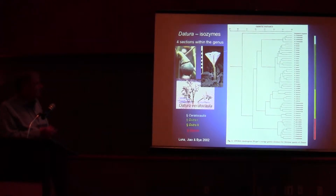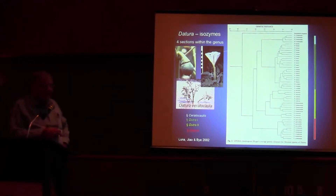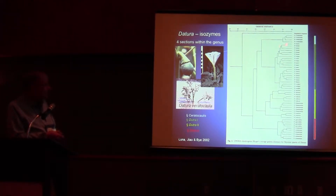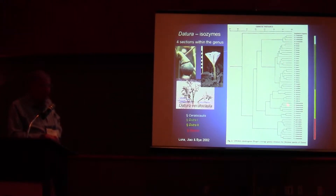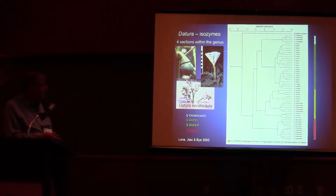If you take a look at isozymes, which was part of our study of the population genetics of Datura in Mexico, we again find that we can split the Dutra subgenus or section into two distinct groups — one in one branch, the other in another branch. So obviously Dutra was an artificial classification, and we ended up with isozymes working on four sections.